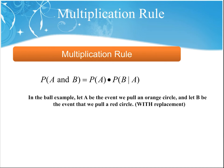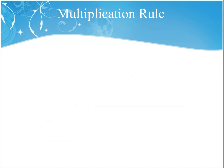In the fruit example, if A is the event that we pull out an orange and B is the event that we pull out a red circle, but we do put the fruit back in the box, then we have 2/5 probability for event A and 3/5 probability for event B. Since the fruit has been replaced, the probability of pulling out an orange and then a red is simply 2/5 times 3/5.